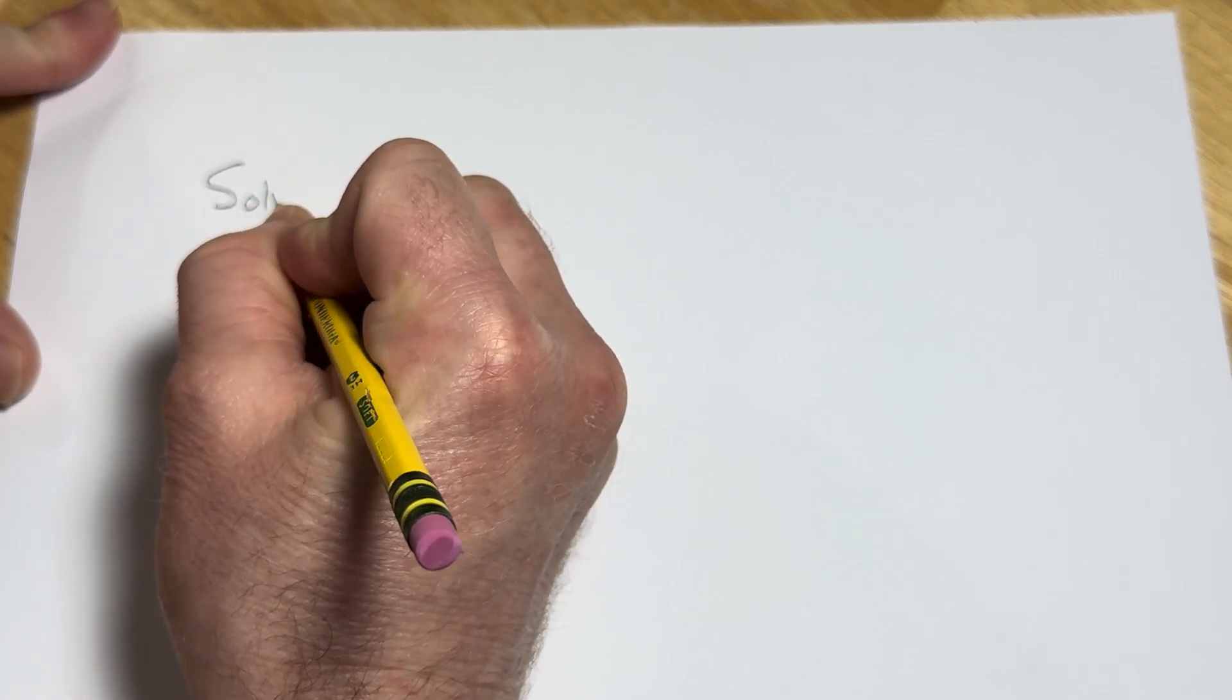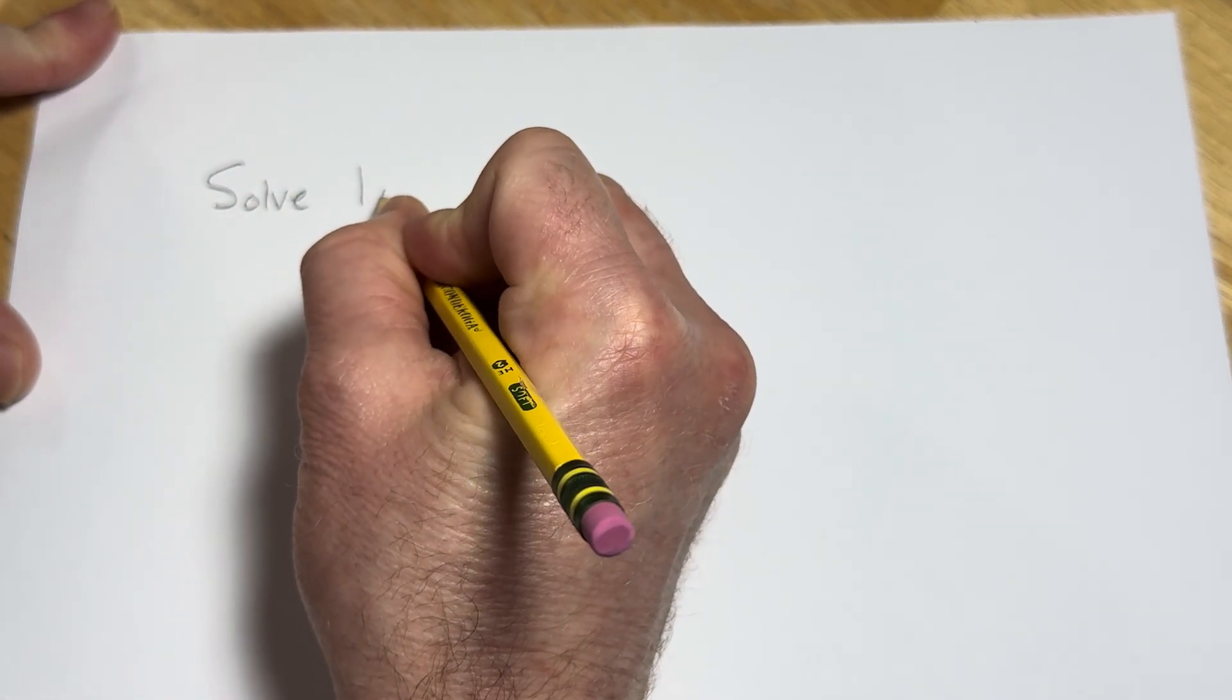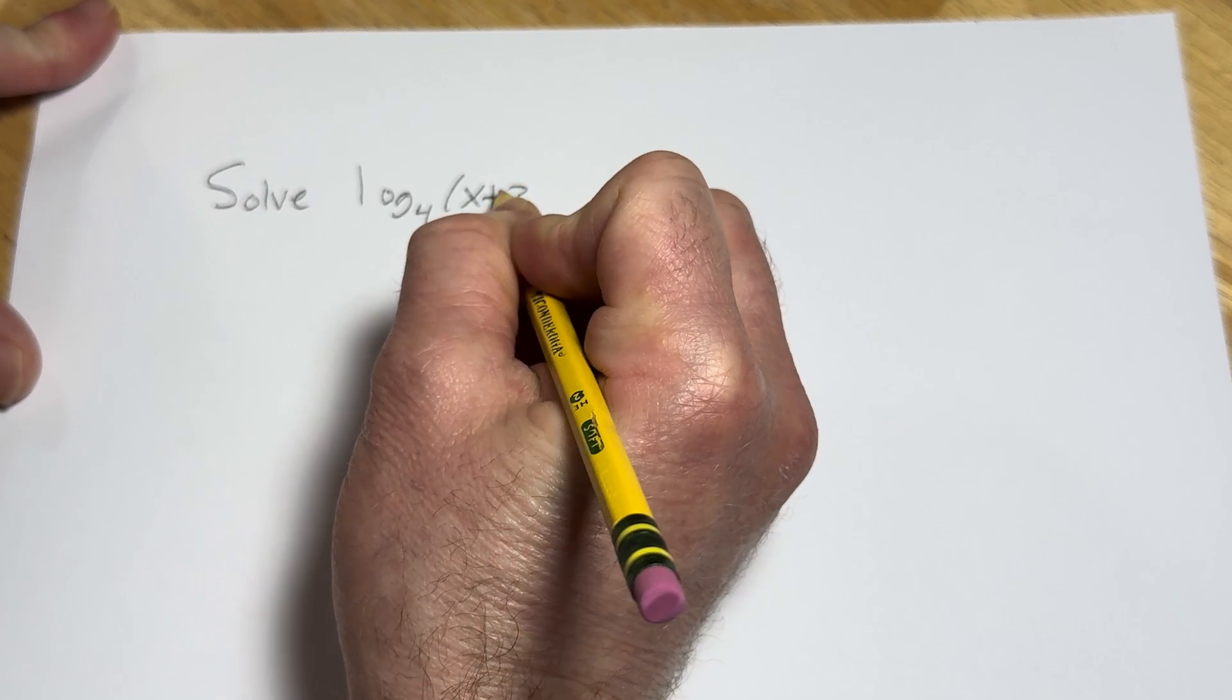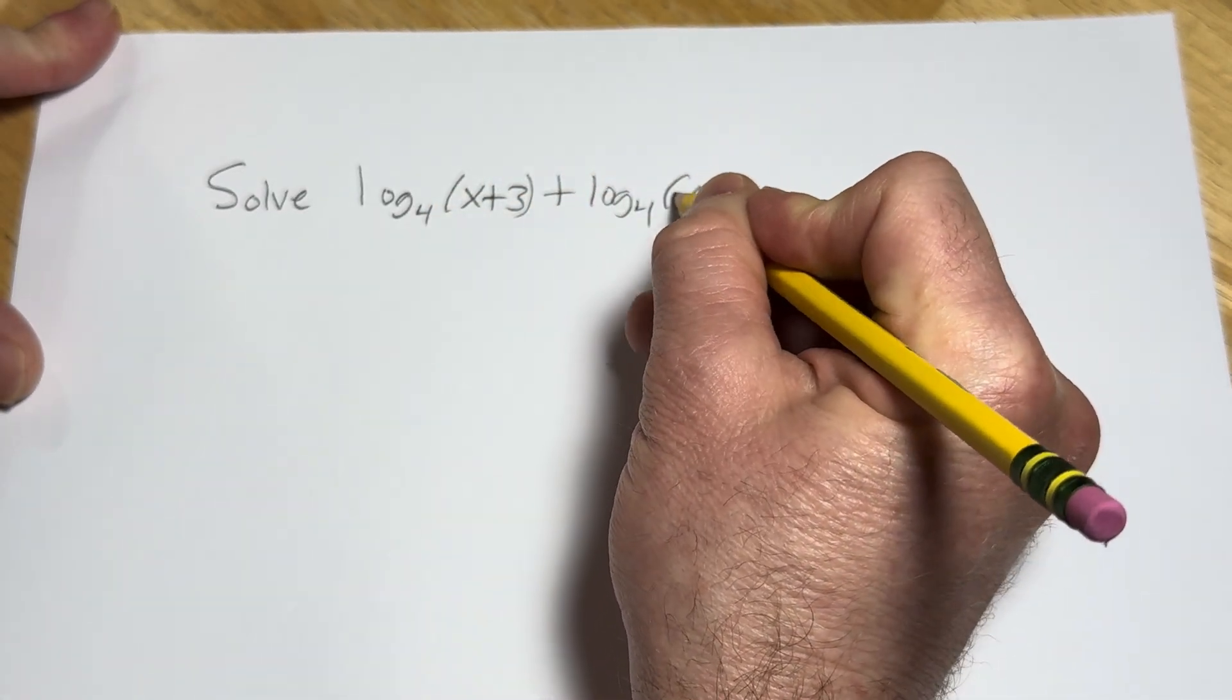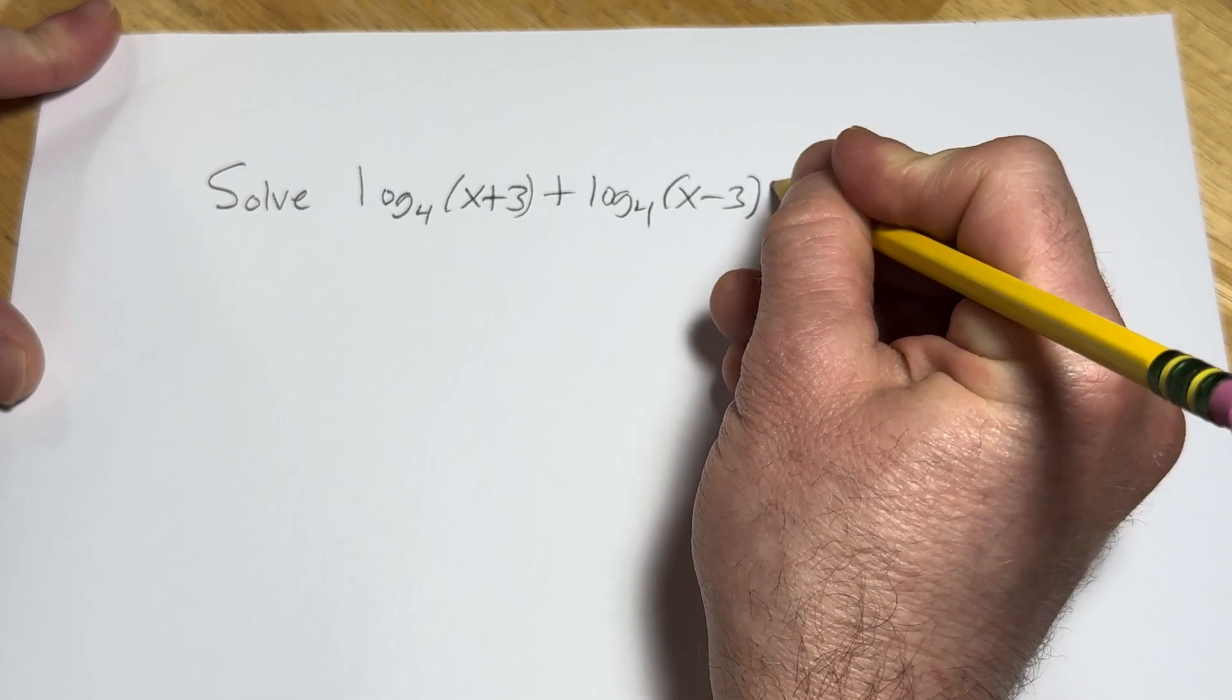The question is to solve log base 4 of x plus 3 plus log base 4 of x minus 3 equals 2.